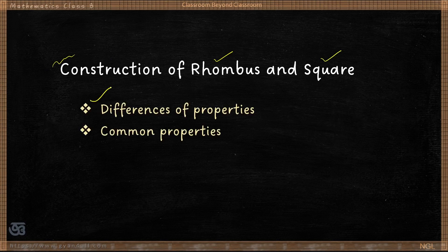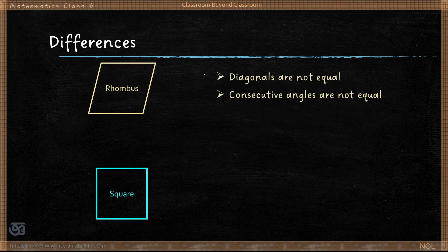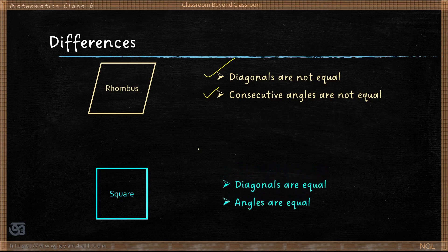There are some differences in properties of rhombus and square, and there are also some common properties. The distinctive property of a rhombus is that the diagonals are not equal, and the consecutive angles are not equal. Opposite angles are equal but consecutive angles are not. While in a square, diagonals are equal and all angles are equal.